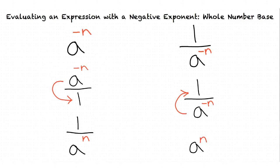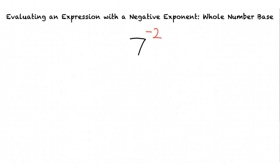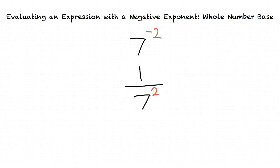Now knowing these two rules, let's solve this problem. We first move our base and exponent to the denominator to convert the negative exponent into a positive. This results in 1 over 7 to the power of 2. From here, we follow the rules of exponents by raising 7 to the second power in order to simplify the expression. This results in our final answer of 1 over 49.